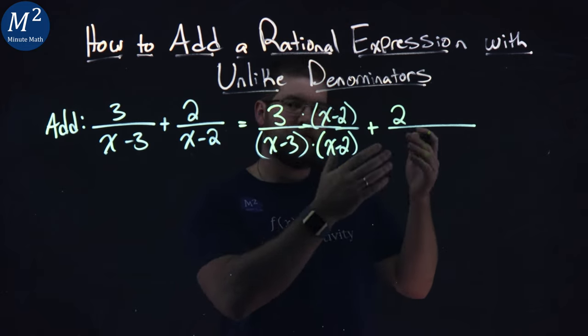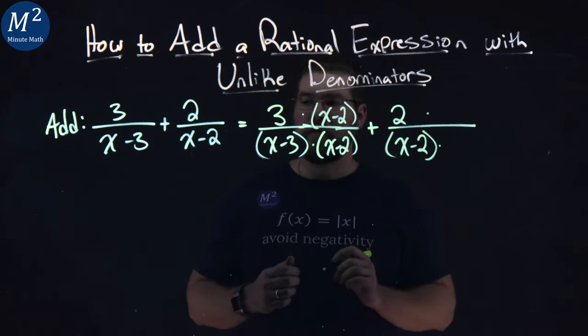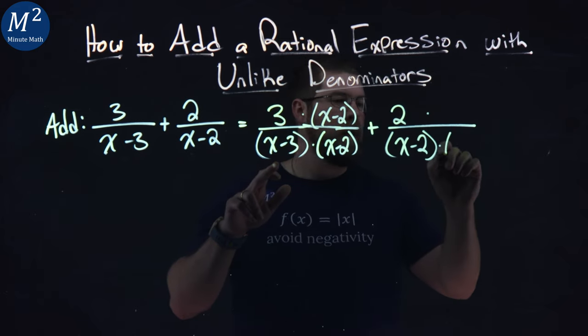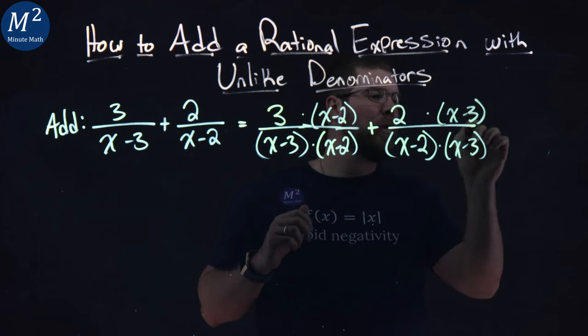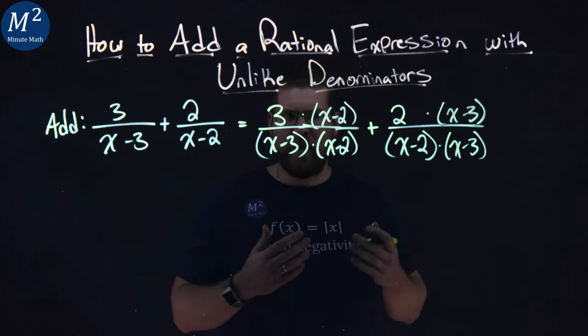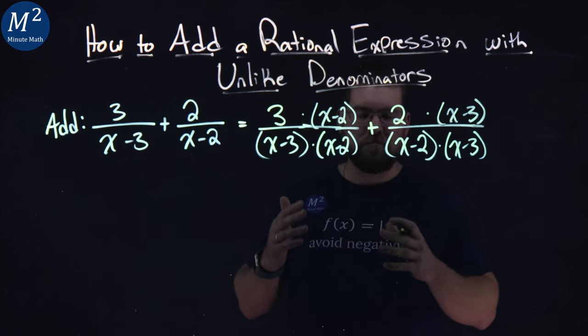And now we have a denominator of x minus 3 times x minus 2, plus, now we need to do the same exact thing to the second fraction. x minus 2 here, we're multiplying this by the other denominator, x minus 3, x minus 3. Now this won't always be the fastest way to do it, or the best way, but it always will work. So it's a good idea to have this in your back pocket.